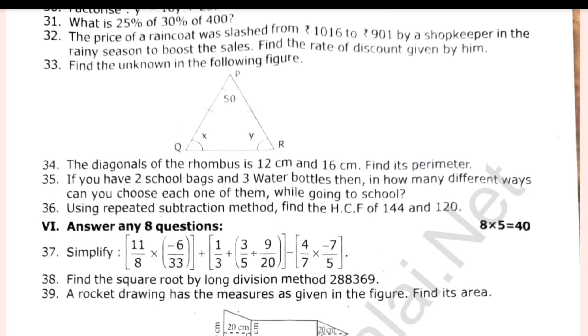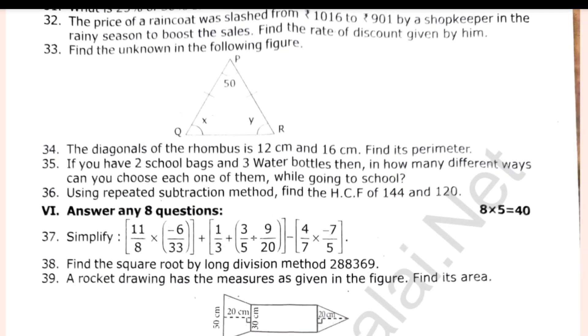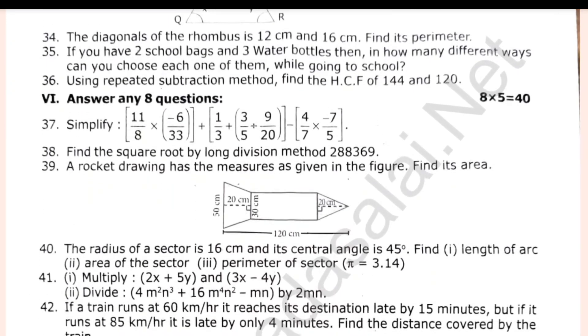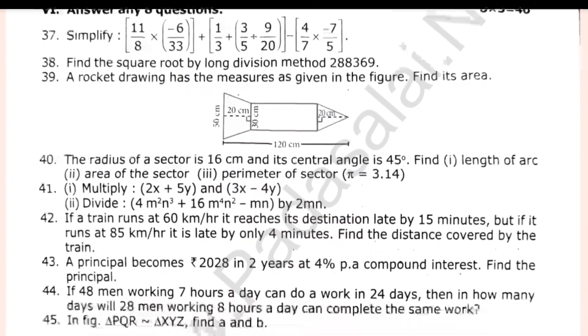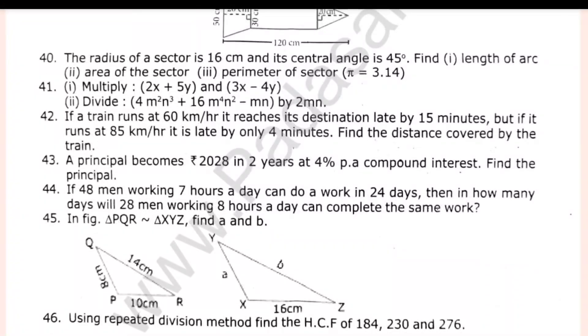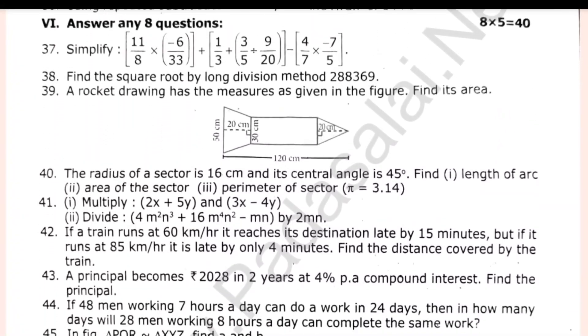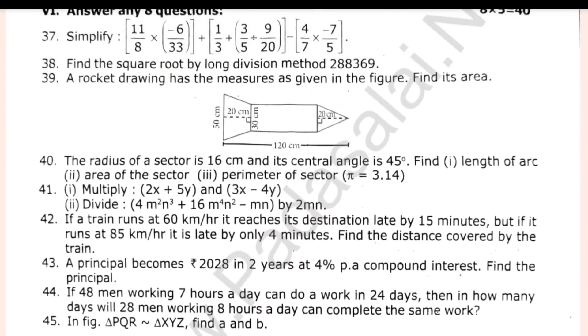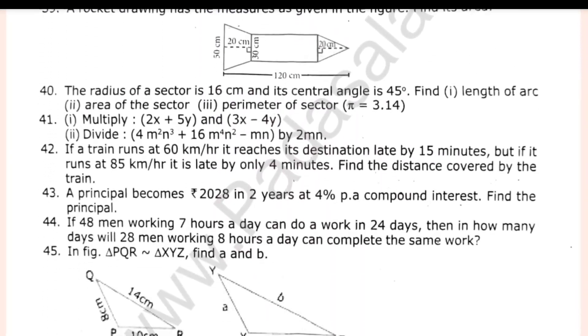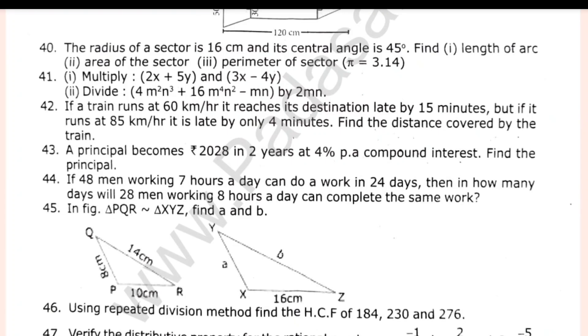And next, question 40. The radius of the sector is 60 cm and its central angle is 45 degrees. Find the volume of the cuboid whose dimensions are X plus 2, X minus 1, and X minus 3.